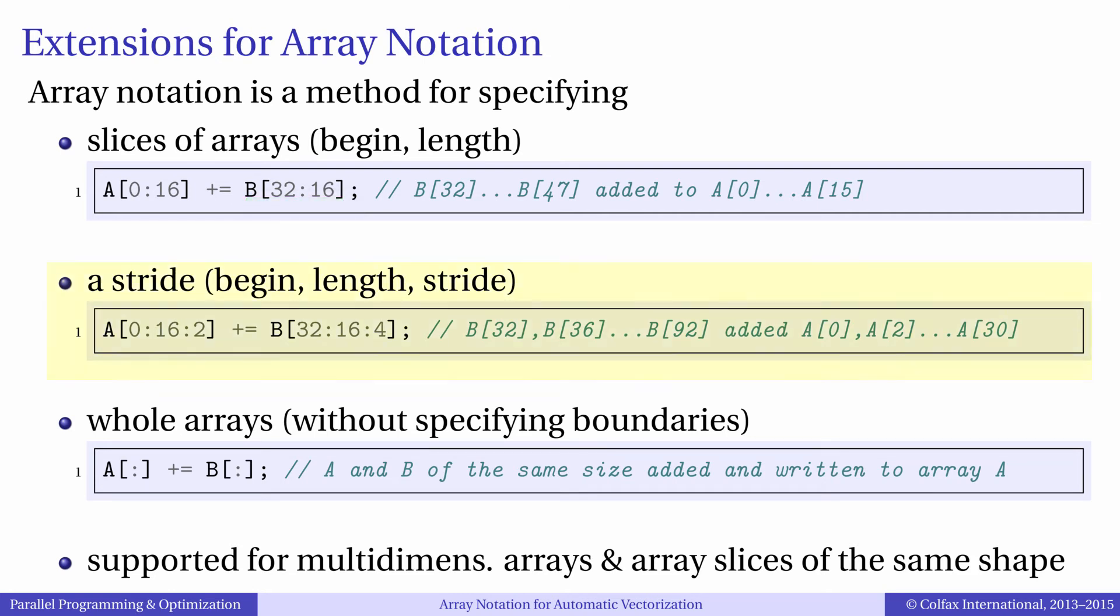We can also specify non-unit strides. For example, here we add elements of b with a stride of 4 to elements of a with a stride of 2. Our experience shows that array notation is particularly useful for vectorizing loops with strided memory access because the compiler is able to better detect vectorization patterns with the array notation than with loops.